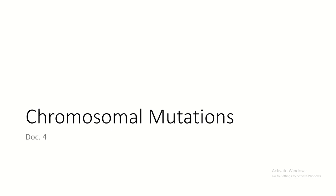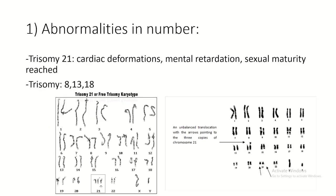Now we're going to start talking about chromosomal mutations - this will be document four. Earlier we talked about DNA mutations: substitution, deletion, and insertion. Now we talk about mutations at the level of chromosomes. The first type of abnormality is abnormalities in number, which includes trisomies and monosomies.